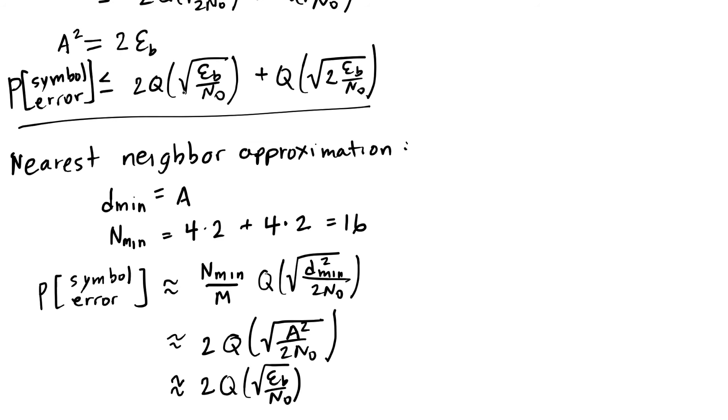So this term is the same in those two formulas, but the addition in the union bound is to also include these neighbors that are a little bit further away. And this symbol error is going to be approximate because this term with the square root of 2 inside of the Q function, the Q function decays really quickly.